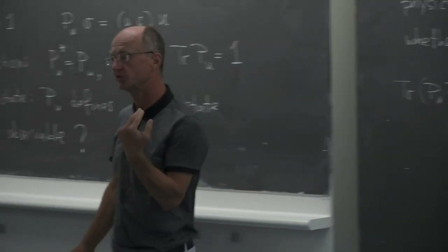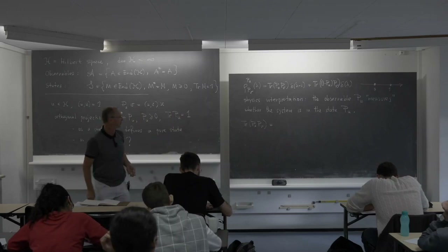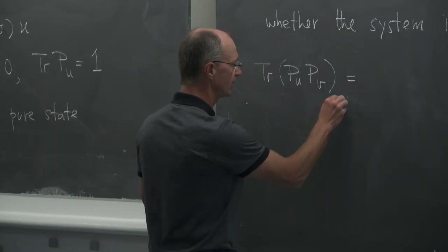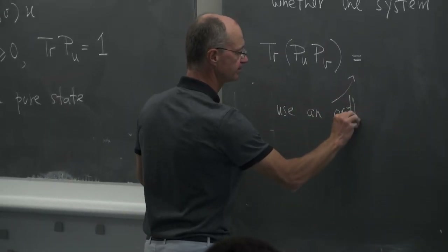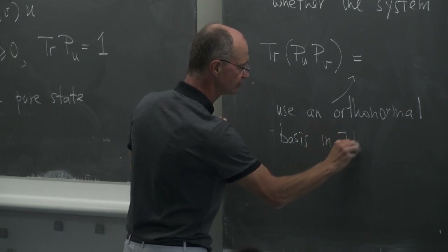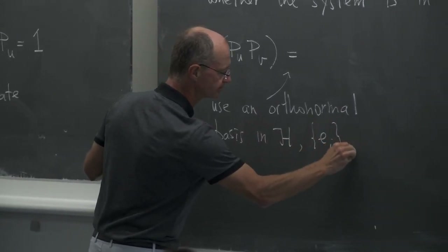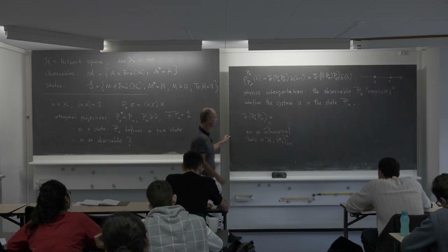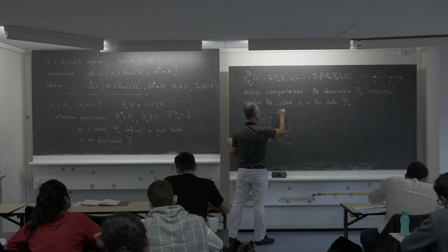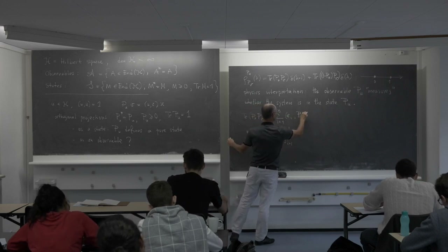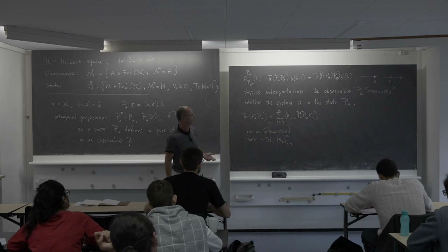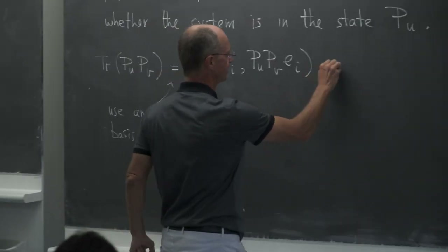Let me compute the trace of P_u times P_v, where u and v are two unit vectors in the Hilbert space. Using an orthonormal basis {e_i} for i = 1 to n, the trace is the sum over i of ⟨e_i, P_u P_v e_i⟩ — the sum of diagonal matrix elements of that operator in some basis.